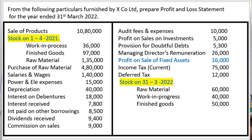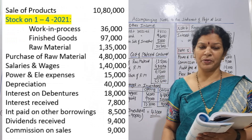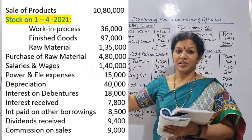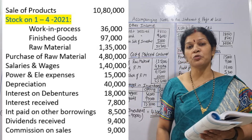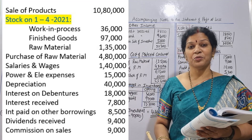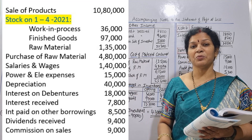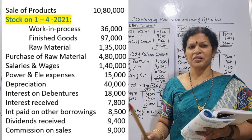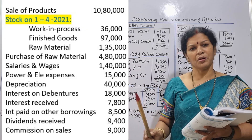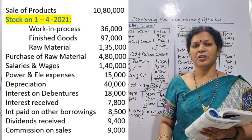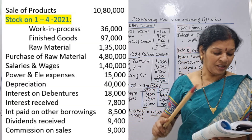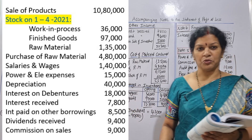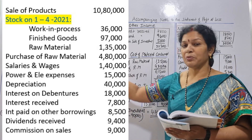The first item is revenue from operations. Looking at the question, the first item is sales. There are also sales returns — sales returns are not taken as income in revenue from operations. We will put sales returns in the working notes.